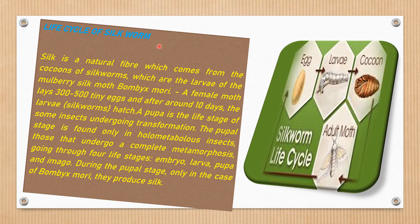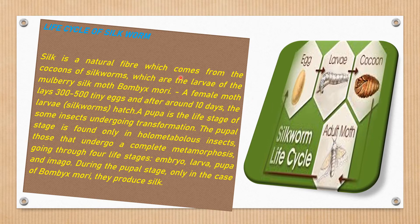Now, the life cycle of Silkworm. Silk is a natural fiber which comes from the cocoons of Silkworms. Follow the diagram with the statement: first egg, then larval stage, then cocoon — this is actually the Silkworm — and the adult Silk Moth. We can get silk from the cocoon stage, which are the larvae of the Mulberry Silk Moth, Bombyx mori.